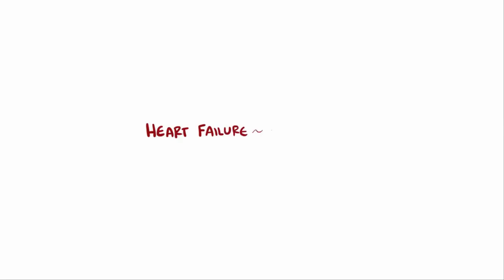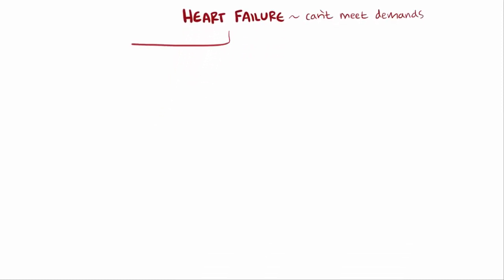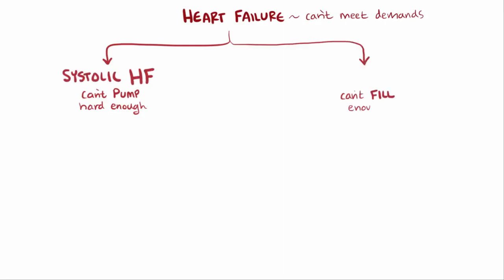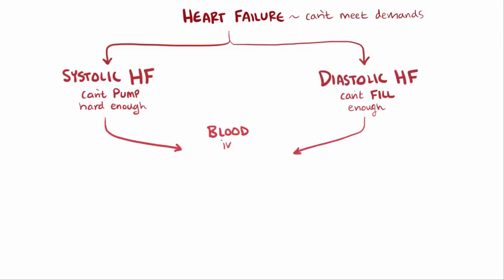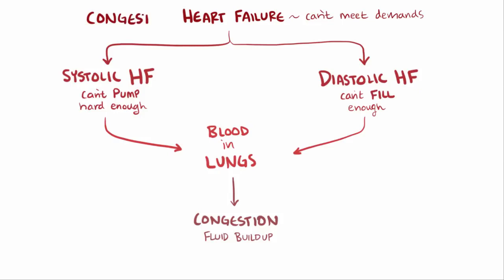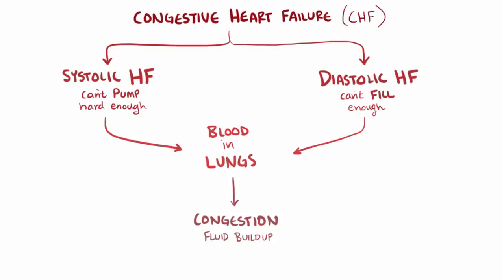Heart failure is used to describe a point at which the heart can't supply enough blood to meet the body's demands, and this can happen in two ways: either the heart's ventricles can't pump hard enough during systole, called systolic heart failure, or not enough blood fills into the ventricles during diastole, called diastolic heart failure. In both cases, blood backs up into the lungs, causing congestion or fluid buildup, which is why it's also often known as congestive heart failure, or just CHF.